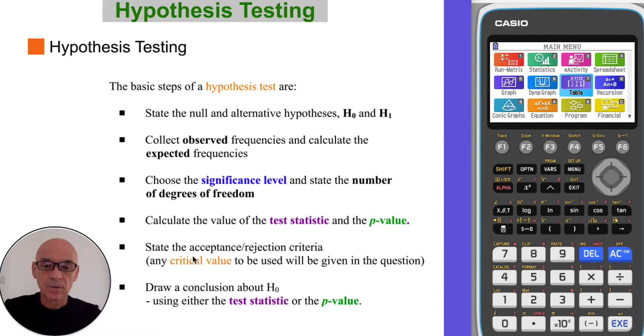In step five we state the acceptance and the rejection criteria. And we use a critical value to make the decision. The critical value which will be given in the question is of course determined by the level of significance that was chosen. In step six we draw a conclusion about the null hypothesis. And we do that by either using the test statistic or the p-value.